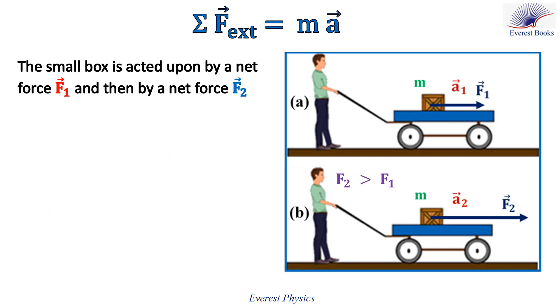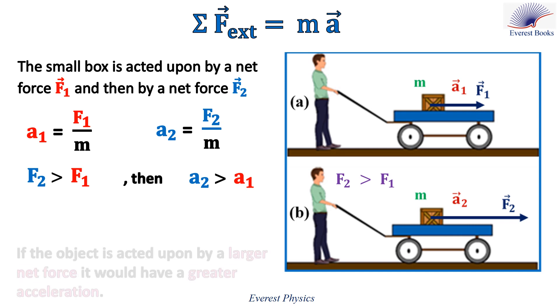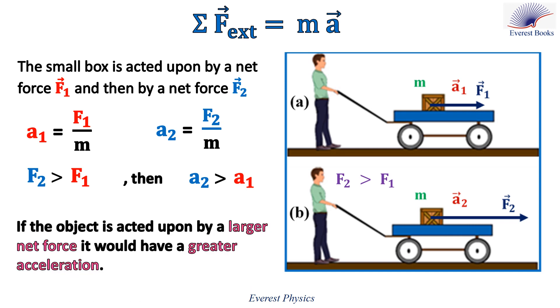Now, the small box is acted upon by a net force F1, and then by a net force F2, where the magnitude of F2 is greater than that of F1. A1 equals F1 over m, and a2 equals F2 over m. But because F2 is greater than F1, then a2 is greater than a1. We conclude that if the object is acted upon by a larger net force, it would have a greater acceleration.